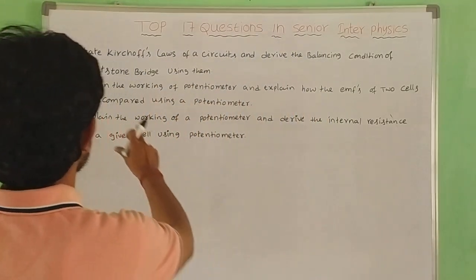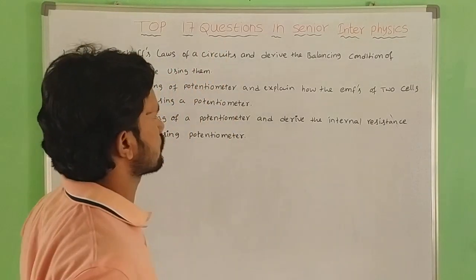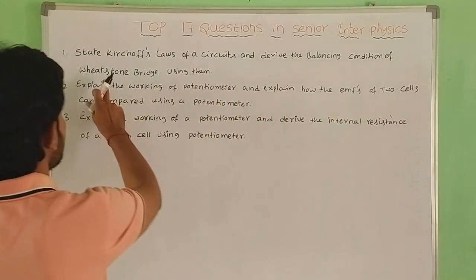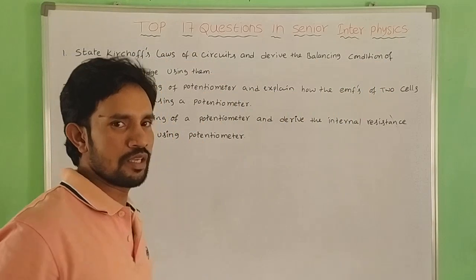First one: State Kirchhoff's laws of circuits and derive the balancing conditions of Wheatstone bridge using them. This is the first question.